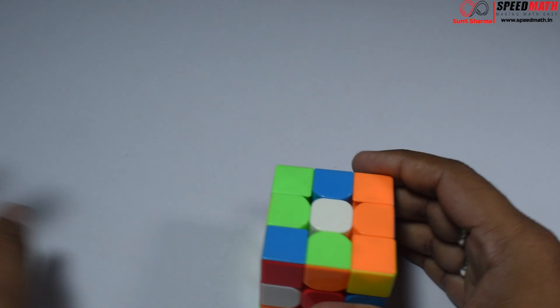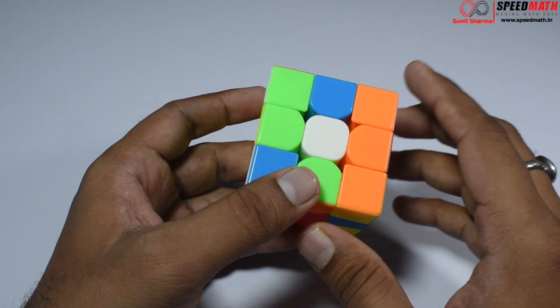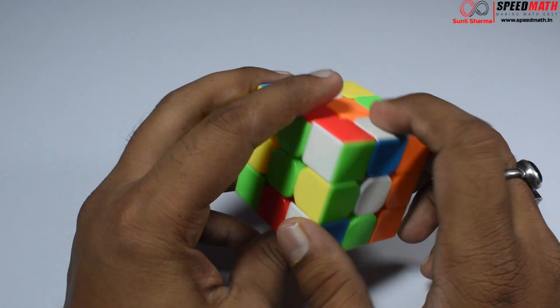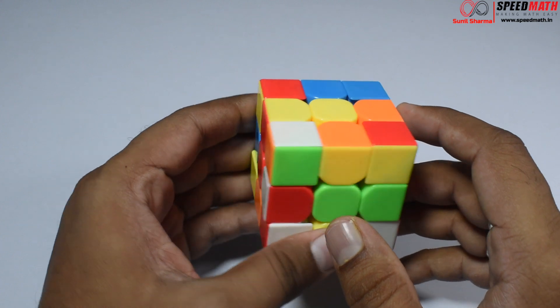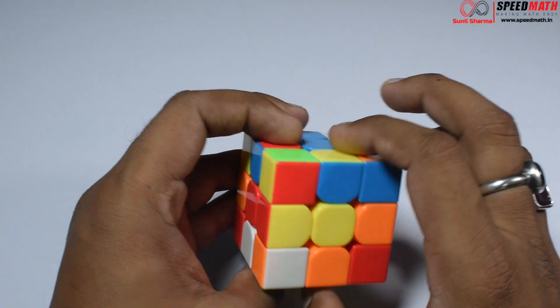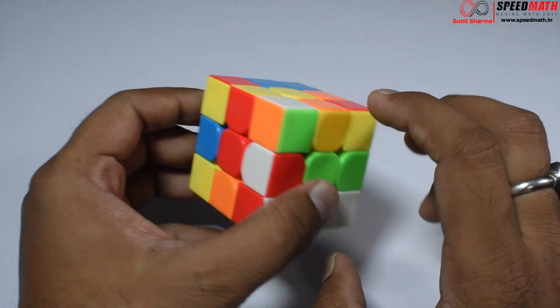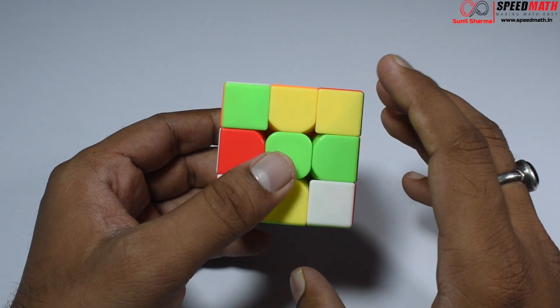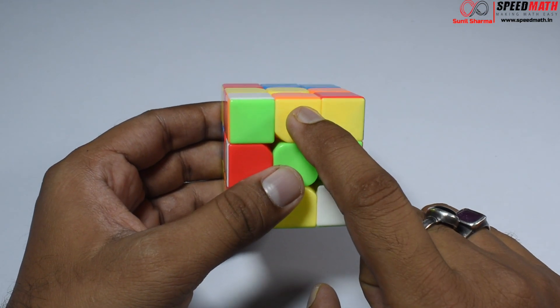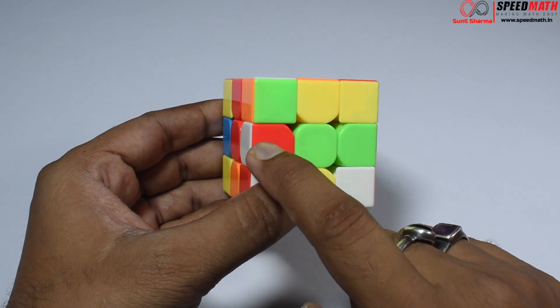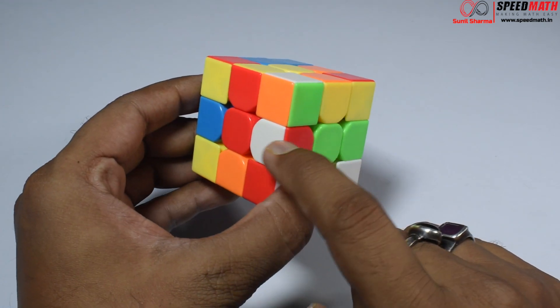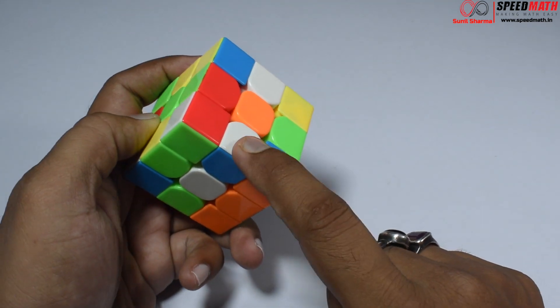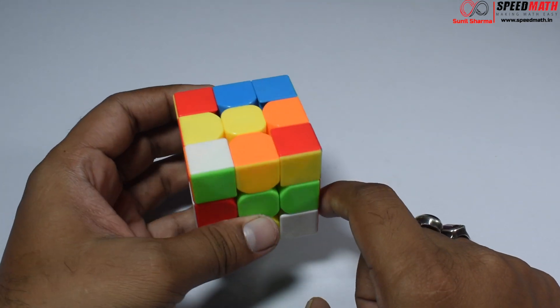First of all, what I generally do is keep the white face down. By doing so, it's very easy to observe where the edge pieces are located. Edge pieces have three possible positions: in the top layer, in the middle layer like this one, or in the bottom layer like this one.